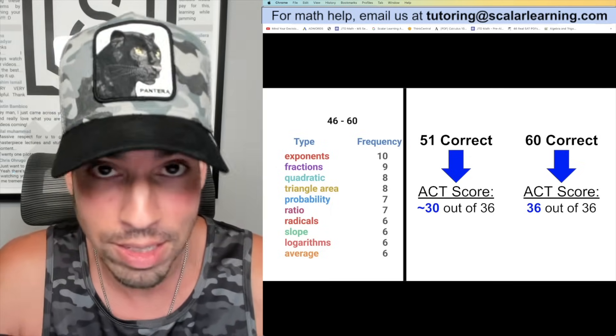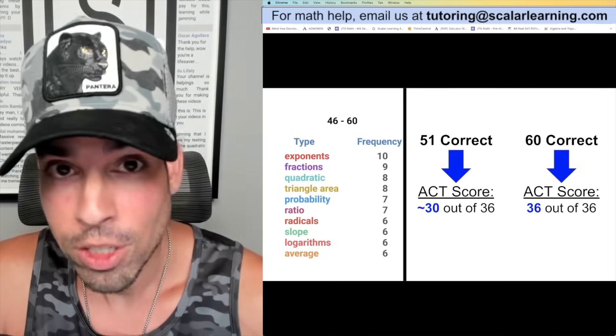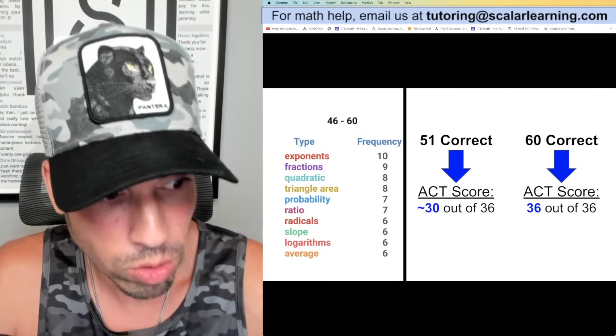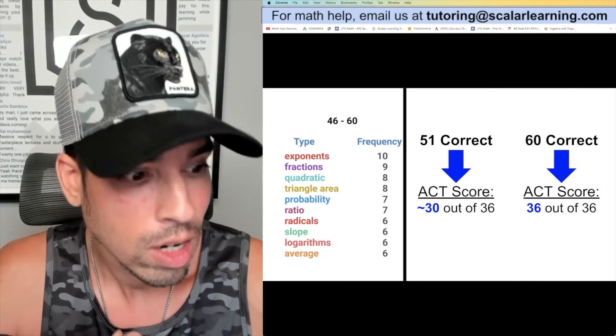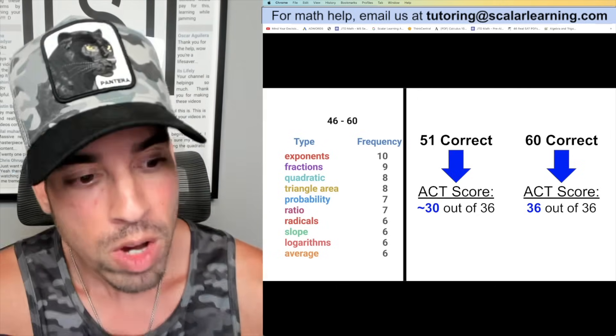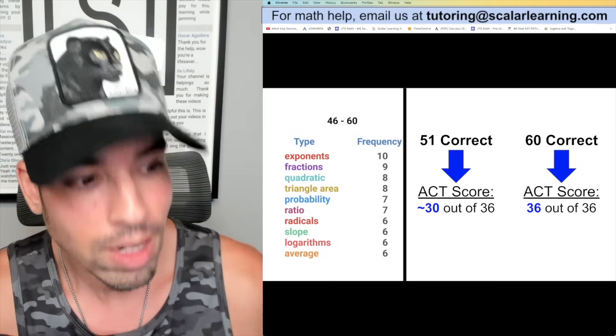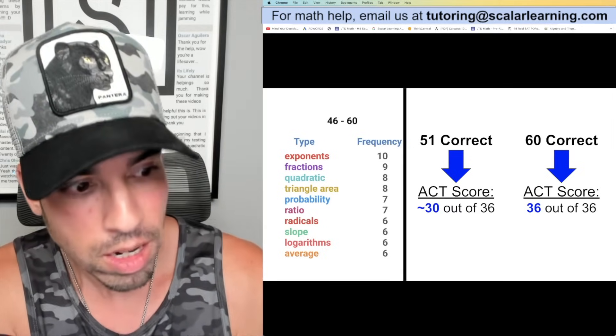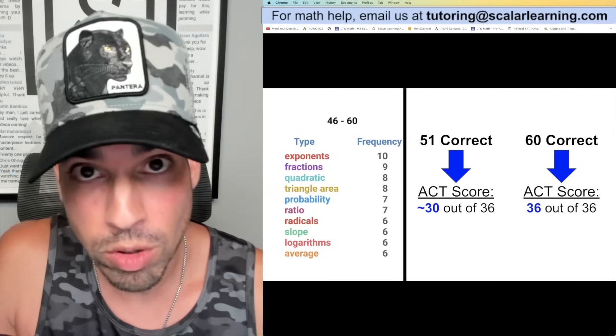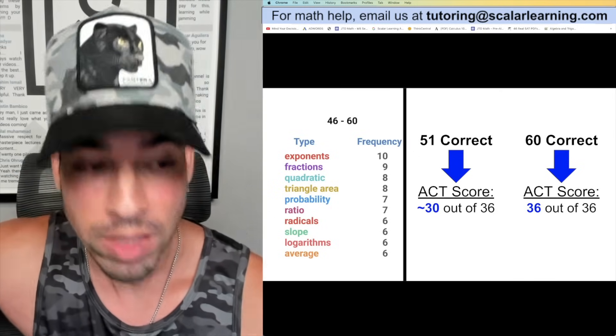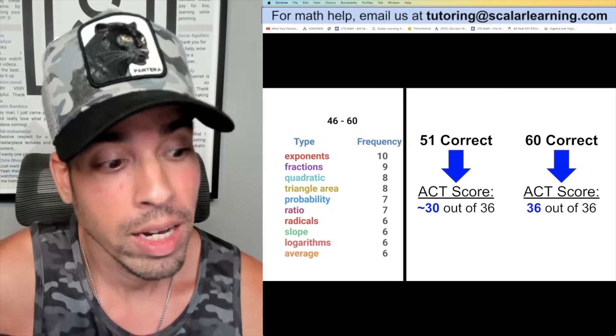As you can see, those fundamentals which need to be mastered regardless - those exponents, those fractions - we're still having slope showing up, we're still having average showing up. But what are these categories that we're seeing that are a little bit newer that we didn't see in those previous categories? I'm seeing triangle area - so we know that triangle area formula. There's also a trig-based triangle angle formula that you should have down for this as well.